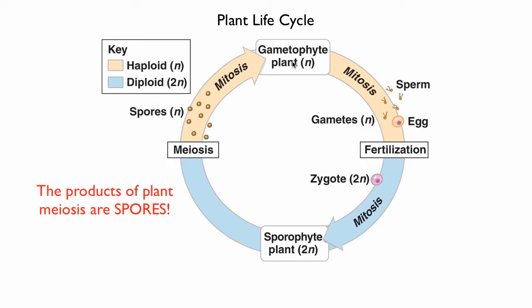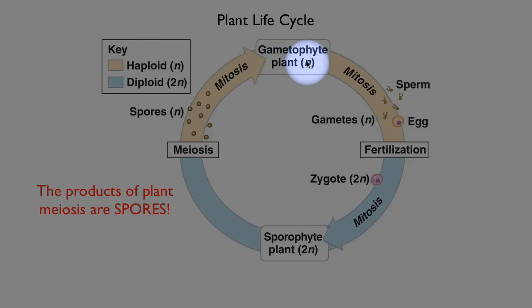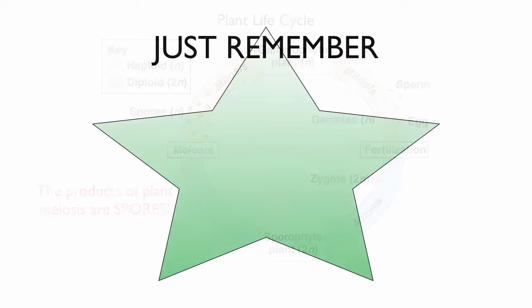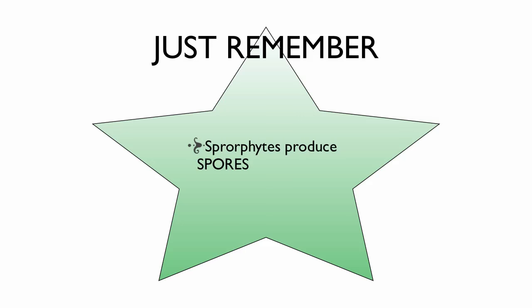This gametophyte will undergo mitosis and produce eggs and sperm, which are called gametes — just like animals — which will fertilize, just like animals, and restore the diploid condition, just like animals. That diploid zygote, the fertilized egg, undergoes mitosis and grows into a sporophyte. So here's what you've got to remember with plants: sporophytes produce spores, gametophytes produce gametes. Keep in mind that the product of meiosis in plants and animals is different. In animals, meiosis produces gametes — eggs and sperm. But in plants, the product of meiosis is spores.